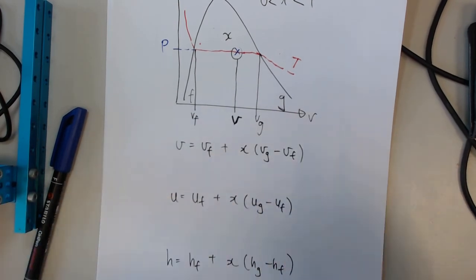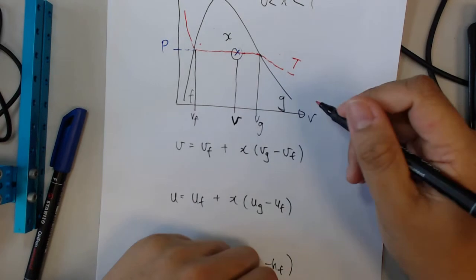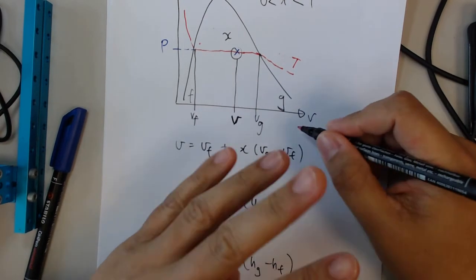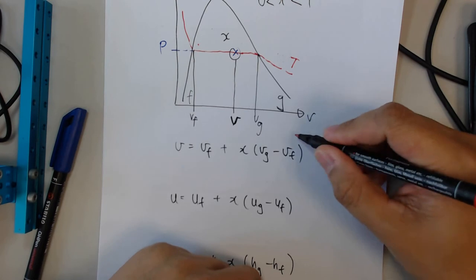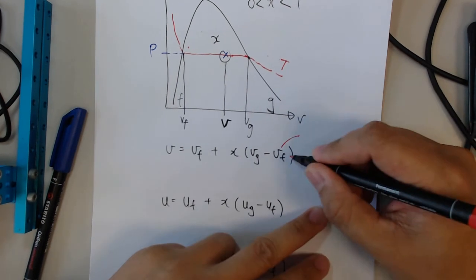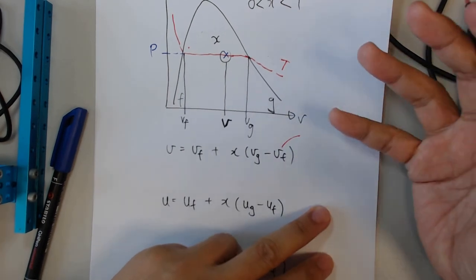Okay, the main issue here now is that if you look at the steam tables, Vg is usually quite big compared to the Vf value. Simply because Vf is liquid, and liquid, you know that the water is relatively incompressible.